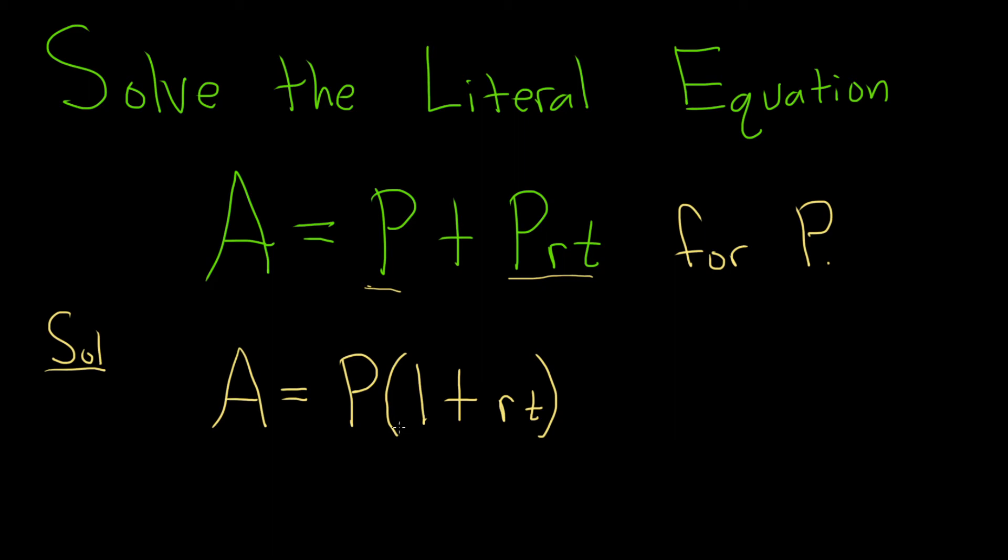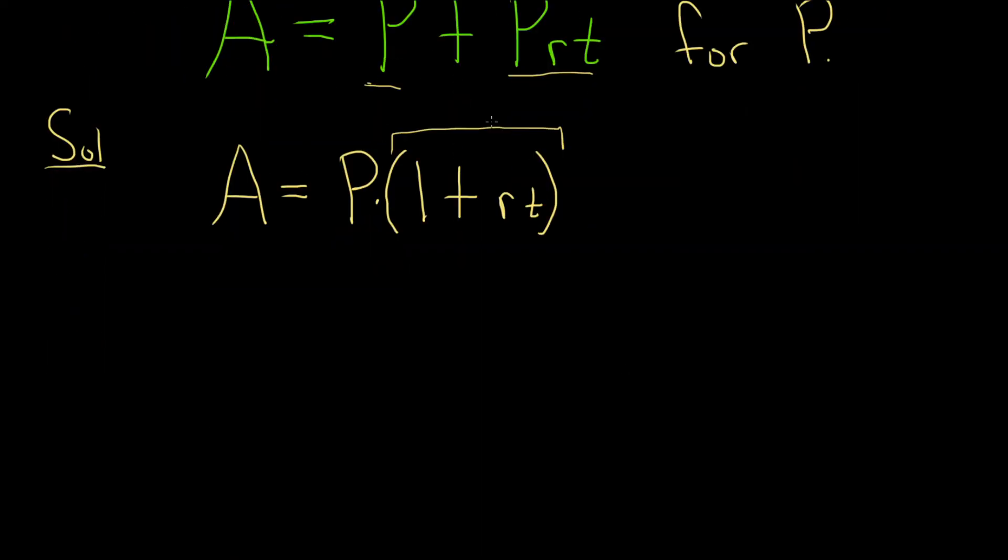Now we're looking for P and it's being multiplied by this 1 plus RT. So what we do is we divide by all of this, both sides. 1 plus RT, and then same thing over here, 1 plus RT. So these cancel.